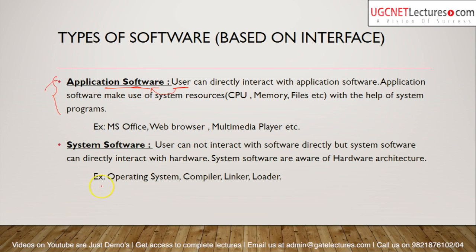Only system programs can interact directly with hardware. Application software internally calls system programs to perform specific tasks like using I/O devices or the CPU. The operating system acts as an interface between the user and hardware. Examples of application software include MS Office, web browsers, and multimedia players — most software today is application software.